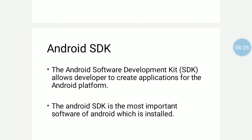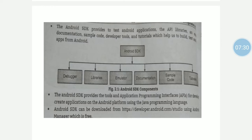Next is Android SDK. The Android Software Development Kit allows developers to create applications for the Android platform. Just as we need JDK to run Java applications, similarly to create applications on the Android platform, we use the Android SDK. The Android SDK is a very important software for developing any Android application. It allows the developer to create Android applications.